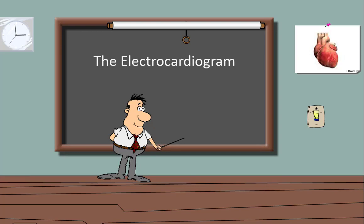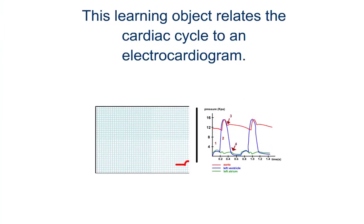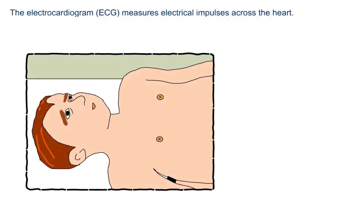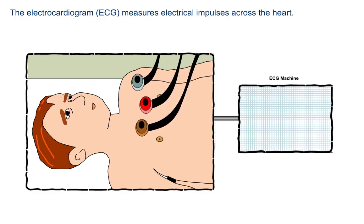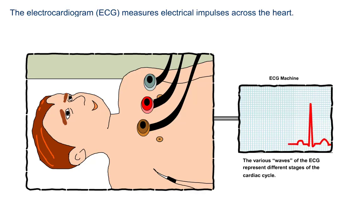Welcome to the electrocardiogram. This learning object relates the cardiac cycle to an electrocardiogram. The electrocardiogram, or ECG, measures electrical impulses across the heart. The various waves of the ECG represent different stages of the cardiac cycle.